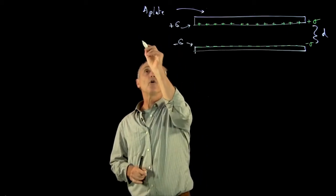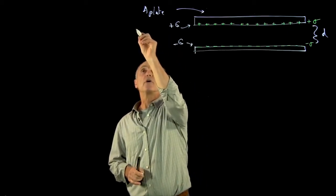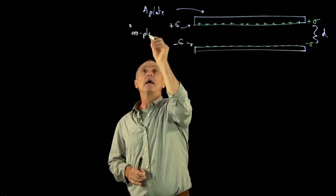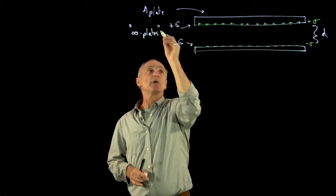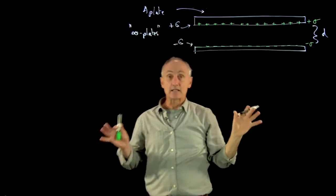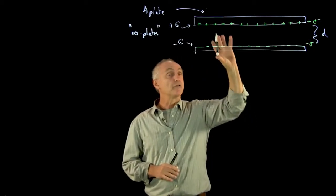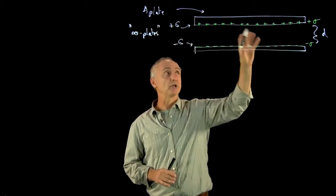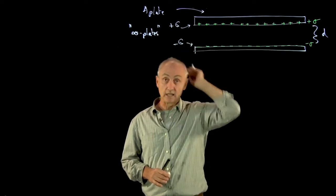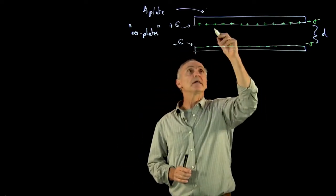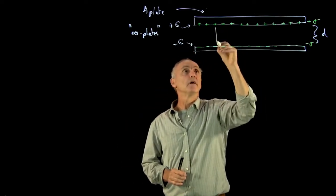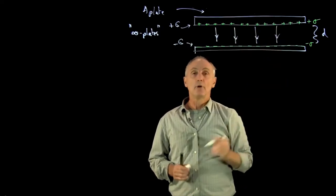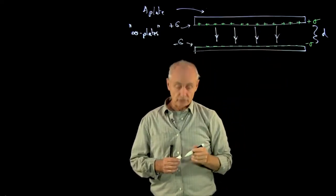What we'll do is we'll have very long plates — so these are, quote, infinite plates. The reason for that is we can neglect edge effects. For a real parallel plate capacitor it's a little more complicated, but for the moment we can neglect edge effects and calculate the electric field between the plates using Gauss's law.